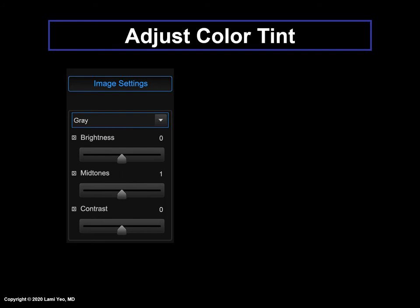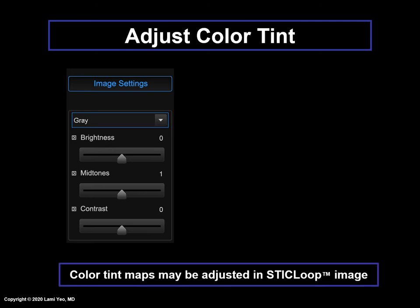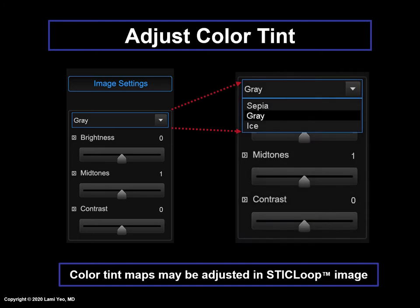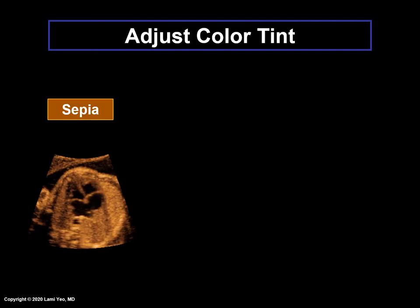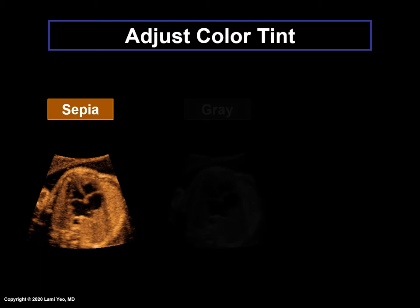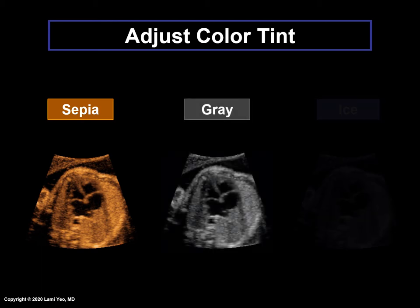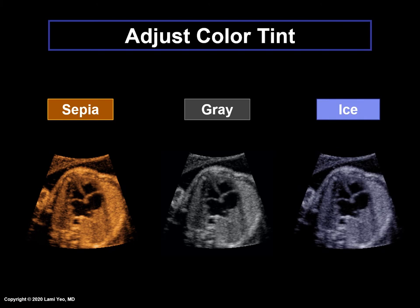Another adjustment that can be made to the STICLoop image is to the color tint. There are several color tint maps available in STICLoop and are chosen based on user preference: sepia, gray, and ice. Here are examples of the same four-chamber view in sepia, gray, and ice color tint.